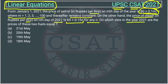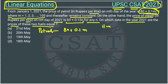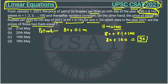On which date in the year 2021 are the prices of these two fuels equal? So they have given the price equation for petrol: the equation is 80 plus 0.1m, where m is 1 to 100. After day 100, the price will be constant. If m is 100, the price is 80 plus 0.1 times 100, which equals 90. So when the price of petrol reaches 90, it stops increasing. For diesel, the equation is 69 plus 0.15n, where n can be anything from 1 through the whole year.